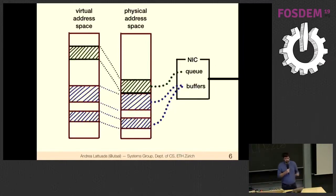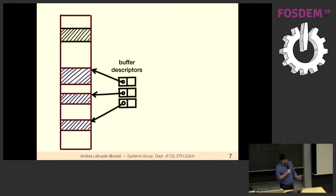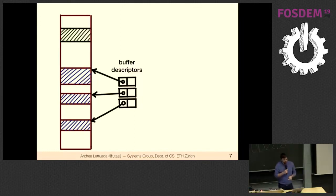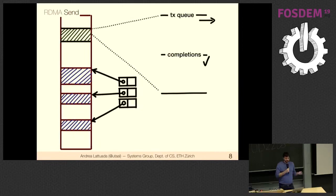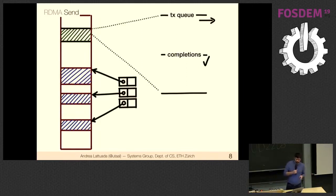The process also needs a way to communicate with the NIC directly from user space, ideally without kernel involvement. This is done by allocating a queue — a memory region agreed upon between the process and the NIC — where the process enqueues operations for the NIC to grab. There's a transmit queue representing requested hardware operations, and a completion queue listing finished operations.